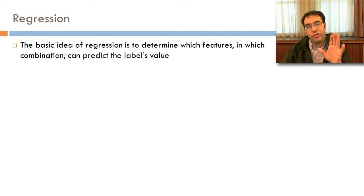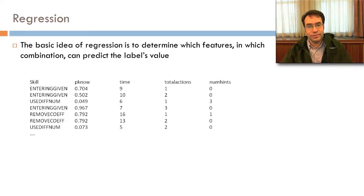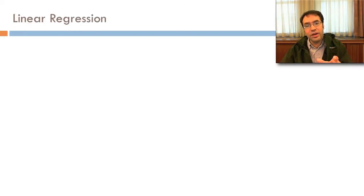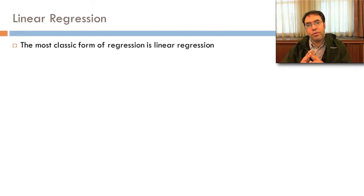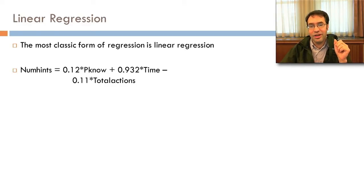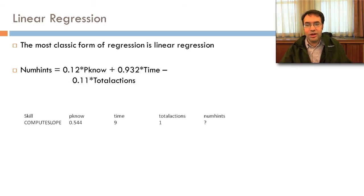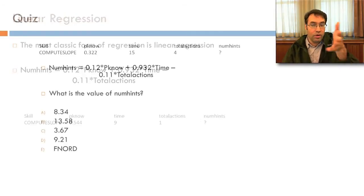The basic idea of regression is to determine which features, in which combination, can predict the numerical label's numerical value. Linear regression is the most classic form of regression. And in fact, many courses don't actually go anywhere past it. An example of that would be num hints equals 0.12 times p_no plus 0.932 times time minus 0.11 times total actions. So in this case, if you try to predict num hints from p_no, time, and total actions, well, let's try it.